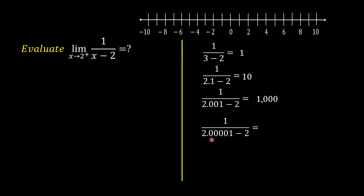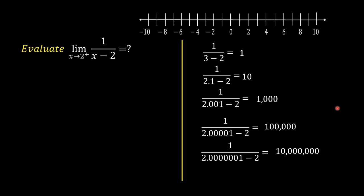1 over 2.000001 minus 2 is equal to 1,000,000. As x becomes closer and closer to 2 from the right, the answer becomes bigger and bigger, approaching positive infinity. So, the limit of 1 over x minus 2 as x approaches 2 from the right is equal to positive infinity.